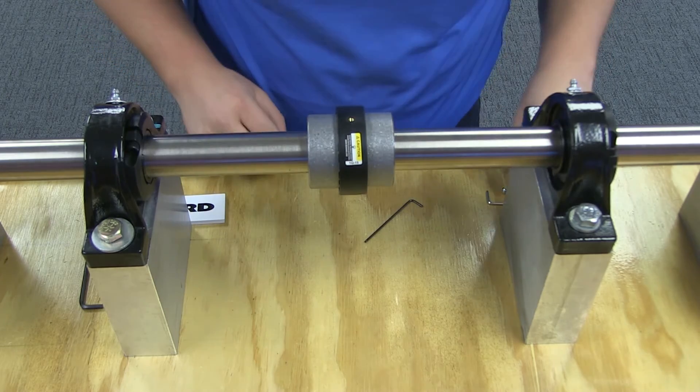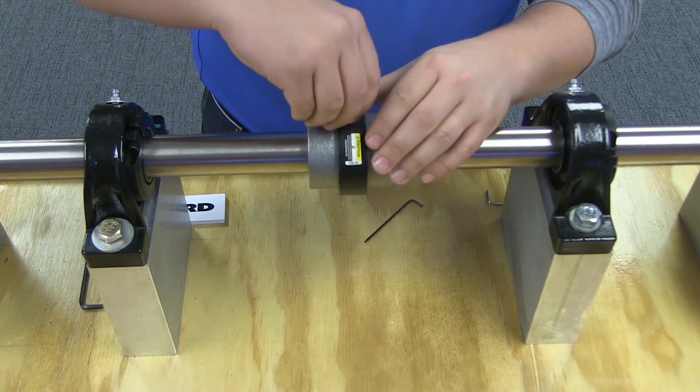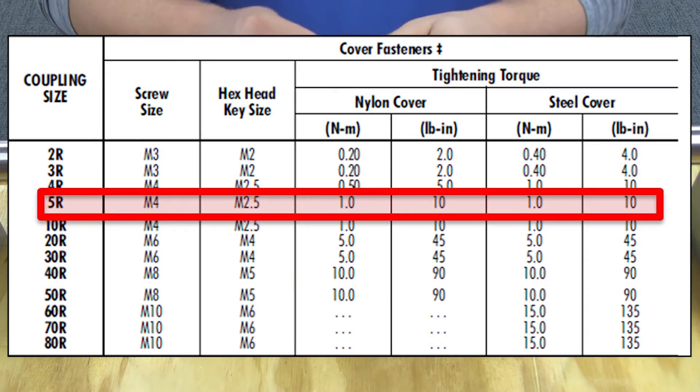To finish installation, install and tighten the cover fasteners. Make sure you do not exceed the tightening torque values. For additional information on torque values, please refer to this table.